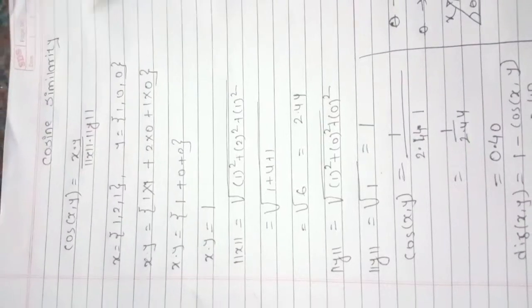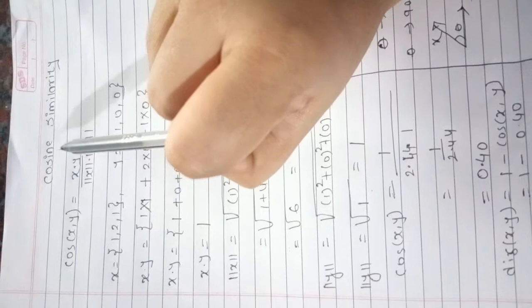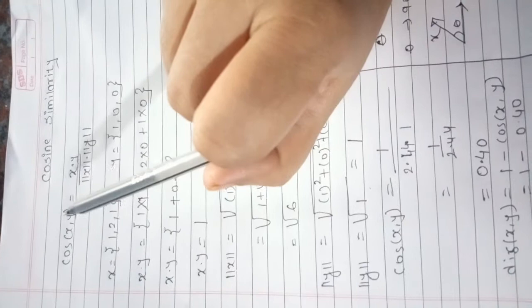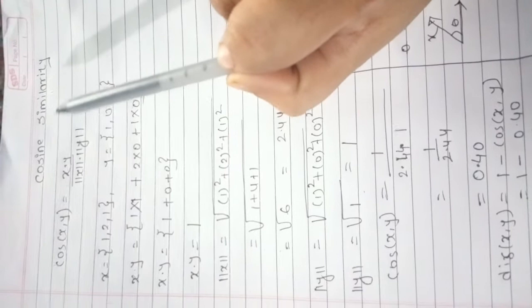Today, we will learn about cosine similarity. What do you mean by cosine similarity? It is a measure to find out the similarity between two documents, and this document is considered as a vector. Basically, cosine similarity is used to find out the similarity between two vectors.